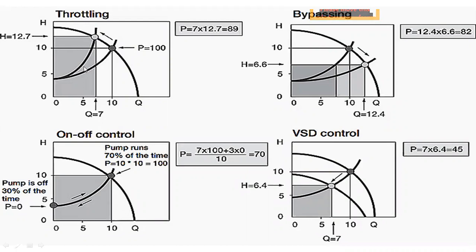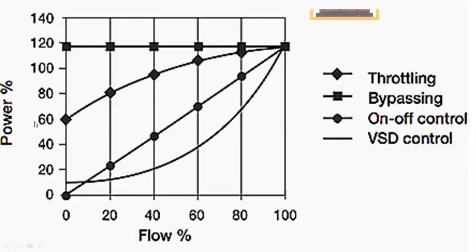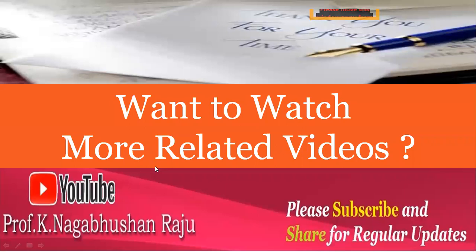In terms of power consumption: throttling consumes approximately 89%, bypassing 82%, on-off control 70% (since the pump runs about 70% of the time), and variable speed drive only 45%. The area under the pump curve directly represents power consumption, making variable speed drive control the most efficient method for varying flow requirements. That covers pumps — their operation, control, and instrumentation. Thank you very much.